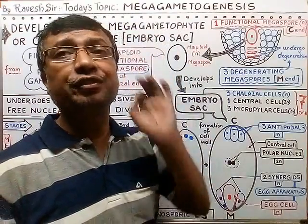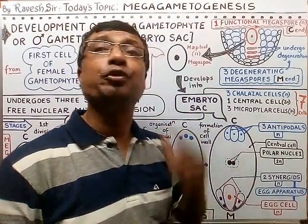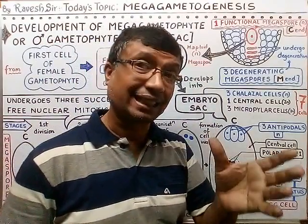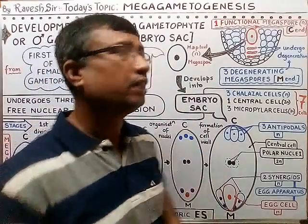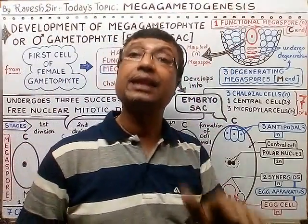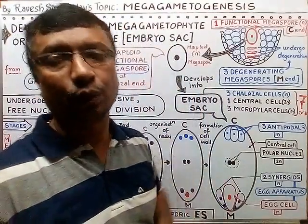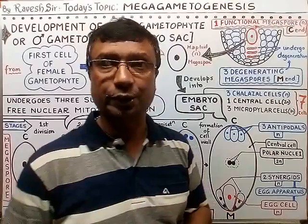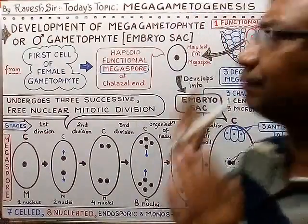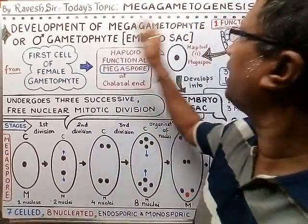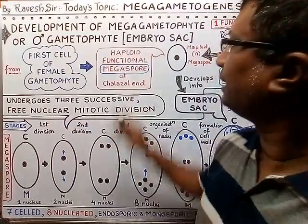From the functional megaspore, the final structure called the embryo sac is formed, which is also called the female gametophyte or mega gametophyte. It is larger in size compared to the male gametophyte. The process of forming the mega gametophyte from the megaspore is called mega gametogenesis. So, mega gametogenesis is simply the formation and development of the mega gametophyte from the megaspore.